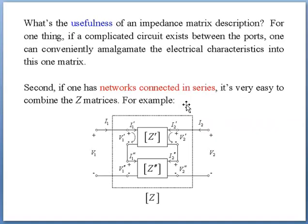Why is the impedance matrix useful? For one thing, if a complicated circuit exists between the ports, one can conveniently amalgamate the electrical characteristics into this one matrix. Secondly, if you have a network connected in series, it would be easier to combine the Z matrices.